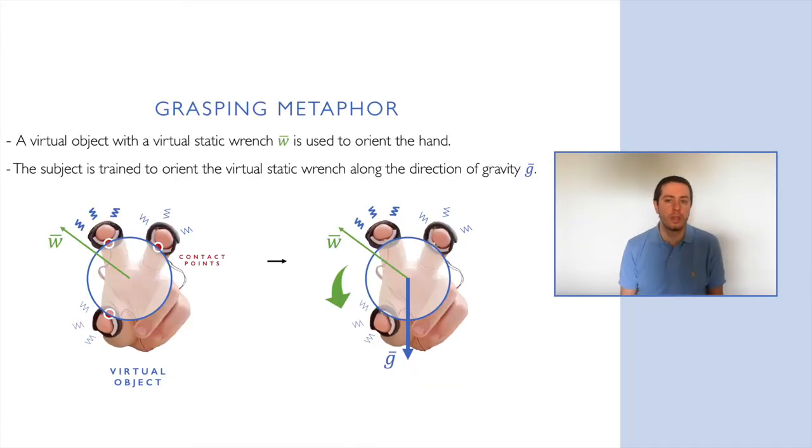This work proposes the idea of suggesting hand orientation combining vibrations and an easy-to-learn approach. A virtual object and a virtual static wrench are used to orient the hand. Indeed, the subject is trained to align the perceived wrench along with the gravity.